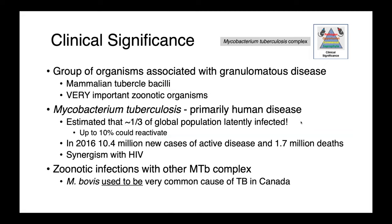Mycobacterium tuberculosis is primarily a human disease and is less commonly encountered in animals. It's estimated that up to one-third of the global population is latently infected — very common among people. Up to 10% of these infections could reactivate, become active TB, resulting in clinical disease and all of the morbidity and mortality associated with that. In 2016, there were 10.4 million new cases of active tuberculosis and 1.7 million deaths.